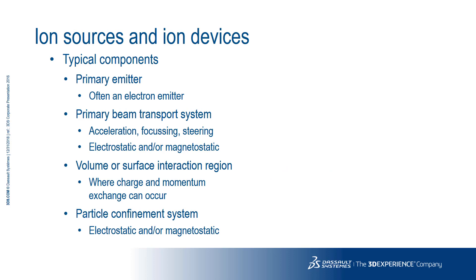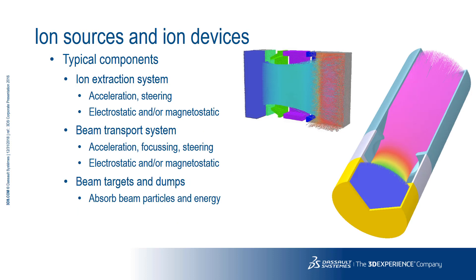If we consider a general ion device in terms of simulation, what components might we encounter? Very often we have a source of particles — occasionally the particles eventually required, but more often electrons or ions in a lower ionization state than needed. These enter a beam transport system where the beam might be accelerated, focused, and steered. If the beam doesn't contain the required particle species, some interaction is required, either with a surface or a volume, where exchange of charge and momentum takes place to give the required species. This often requires a confinement system to increase the residence time of the particles in this region. Once the required ions have been produced, they need to be extracted from the interaction region, usually electrostatically. Unwanted particles then need to be removed from the beam using electric and/or magnetic fields before the beam is transported for use. After transport, the beam is incident on its target, be it a further interaction volume or surface, and spent beams are incident on dumps where the residual beam energy is absorbed.